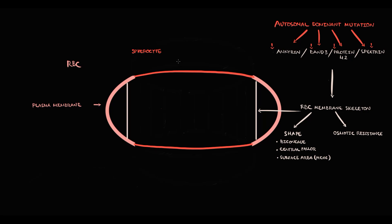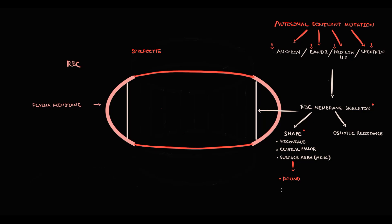So the major problem in hereditary spherocytosis is disruption of the red blood cell cytoskeleton. First, this affects the shape of red blood cells — they become round, and we call them spherocytes. The problem is that round red blood cells are less flexible. They also lose central pallor, and with their round shape their surface area decreases.